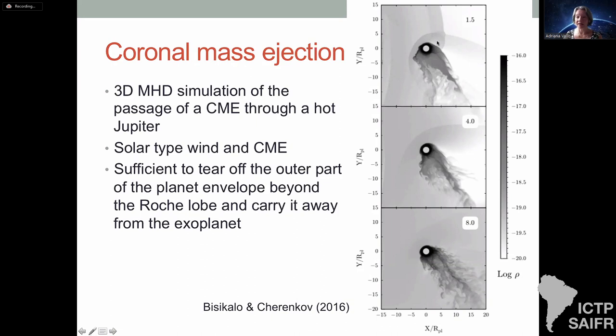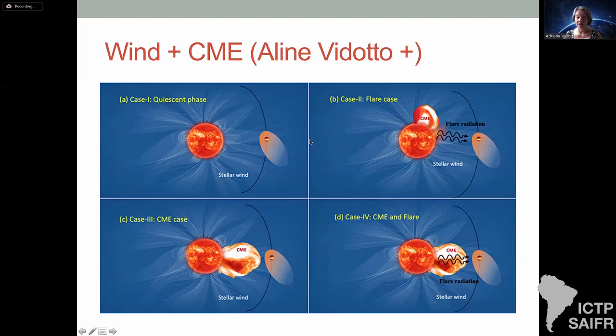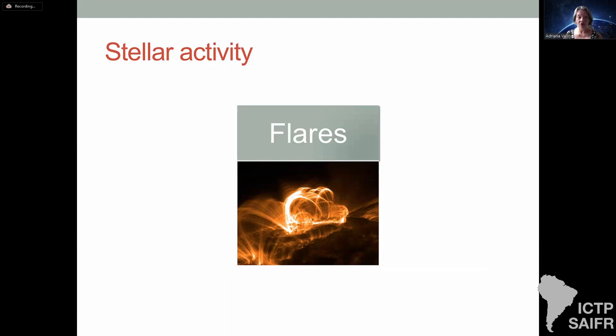CMEs are an enhancement of the stellar wind where huge bubbles of plasma are ejected from the Sun's atmosphere with enhanced magnetic fields and particles. When they reach a planet's atmosphere they would definitely cause erosion.